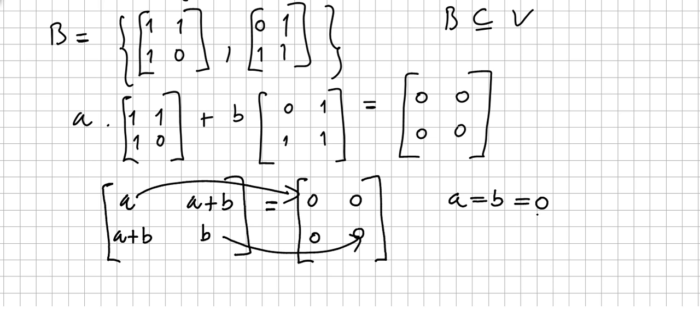So according to the definition, the scalars cannot be all zeros. So since they are all zeros, it means that these vectors are linearly independent.